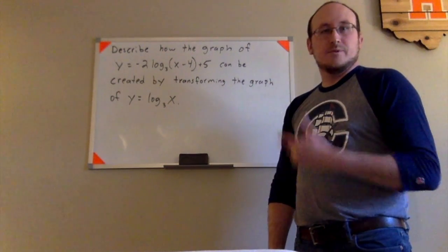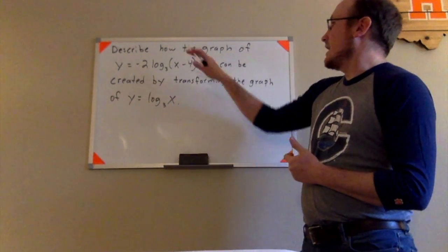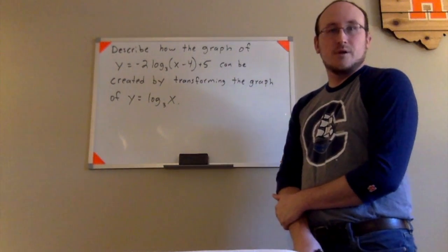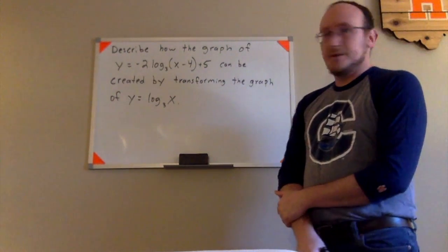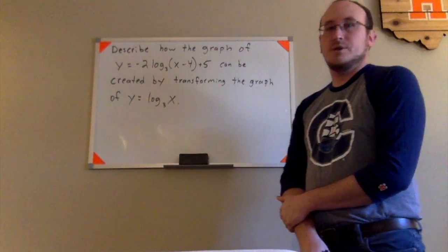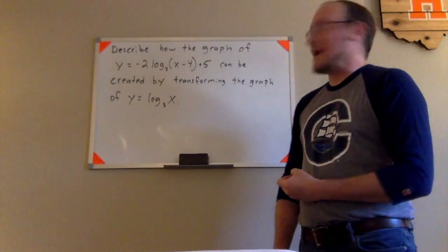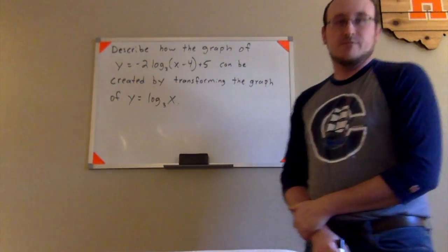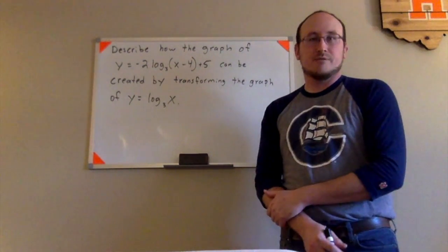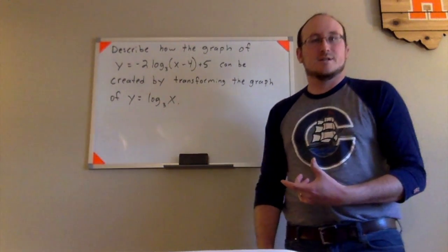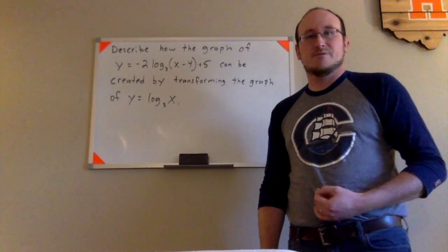Okay, in this particular example, we're going to take a look at how to create the graph of y equals negative 2 log base 3 of the quantity x minus 4 plus 5. We're going to look at how that can be created by transforming the graph of y equals log base 3 of x. We looked at the graph of y equals log base 3 of x in one of our other examples. So now we're just trying to connect this to what we talked about before with the different transformations of functions.